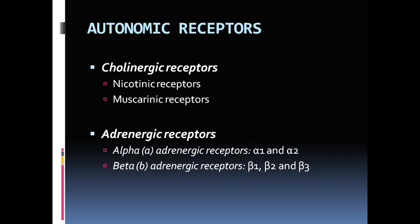Cholinergic receptors are further divided into nicotinic receptors and muscarinic receptors. Nicotinic receptors are present at the junction between preganglionic and postganglionic neurons, as well as at the neuromuscular junction. These nicotinic receptors are ionotropic receptors — when acetylcholine binds, ion channels open, causing depolarization or hyperpolarization of the membrane.